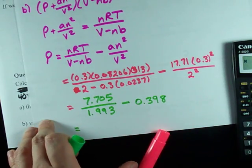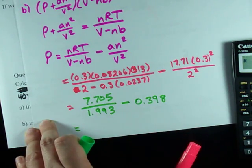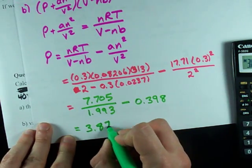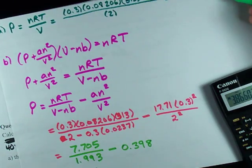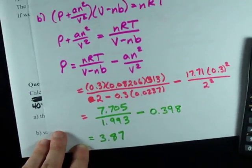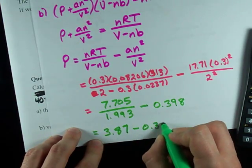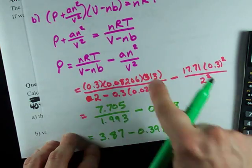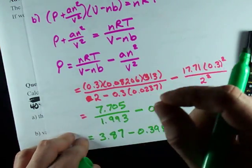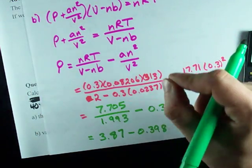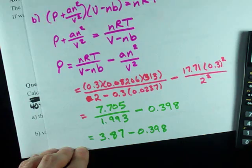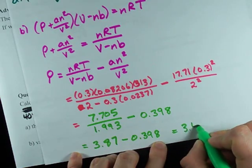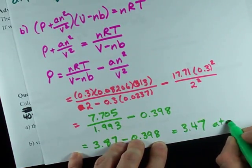Let's see if we can keep going here. We've got 7.705 divided by 1.993 gives me 3.87, which is pretty close to the amount I got from the ideal gas equation. But I have to perturb it or take away this 0.398. That was the AN squared over V squared term, and remember that's the one that makes the biggest difference here because it's acetic acid, a small molecule with heavy intermolecular forces. Minus 0.398 gives 3.47, and the answer is atmospheres.